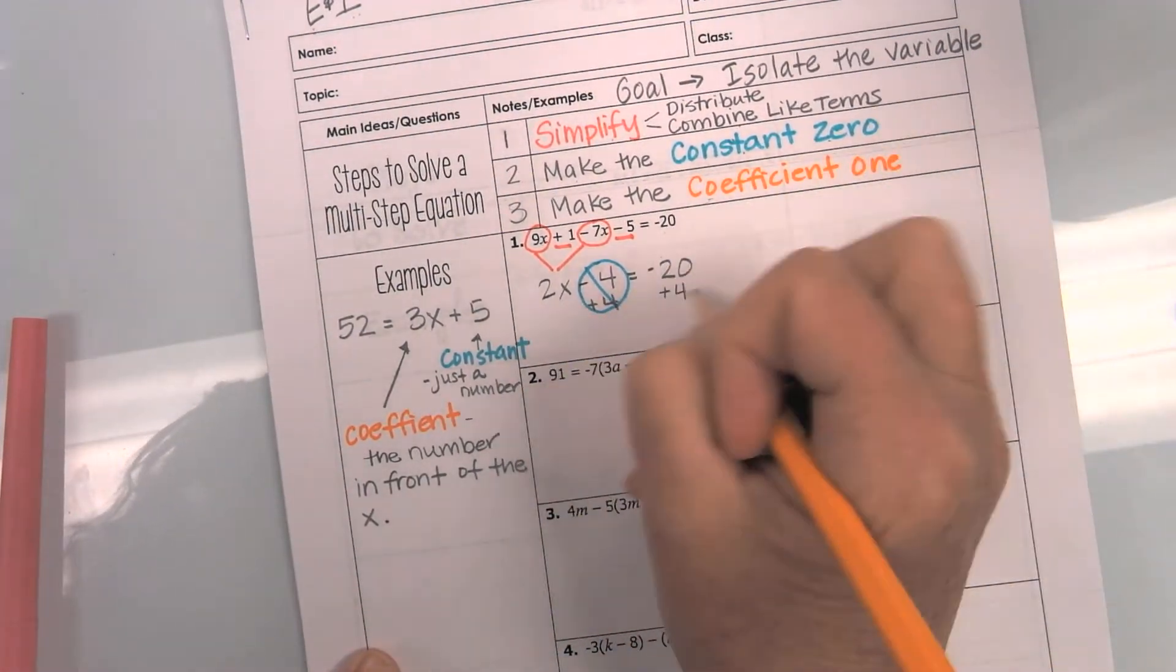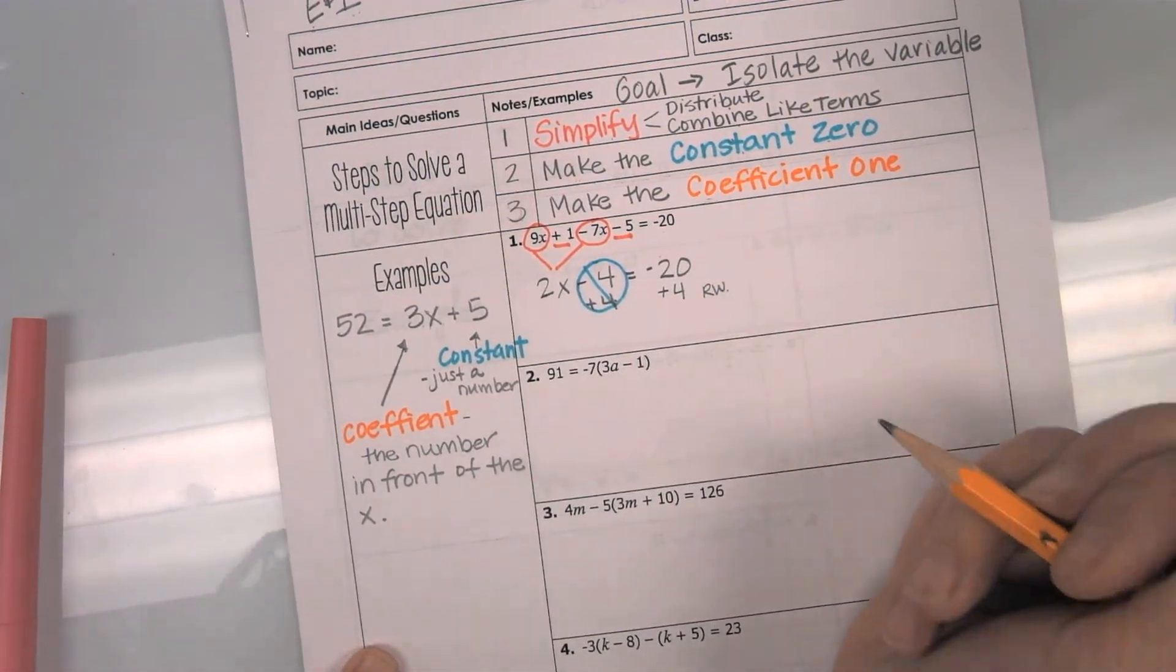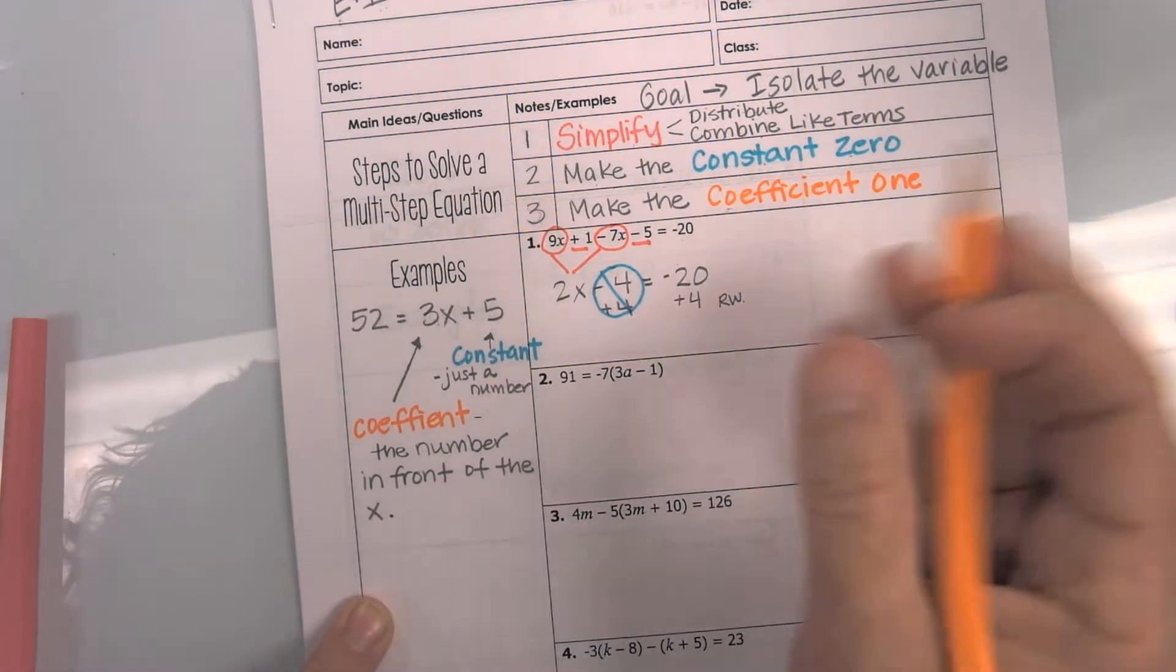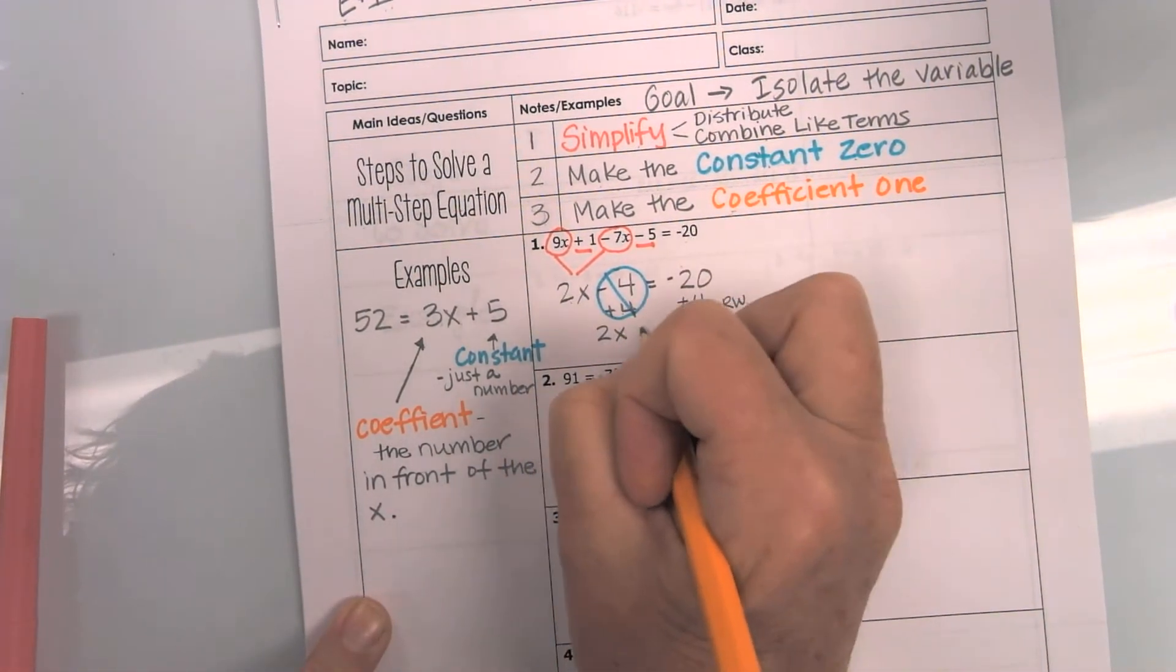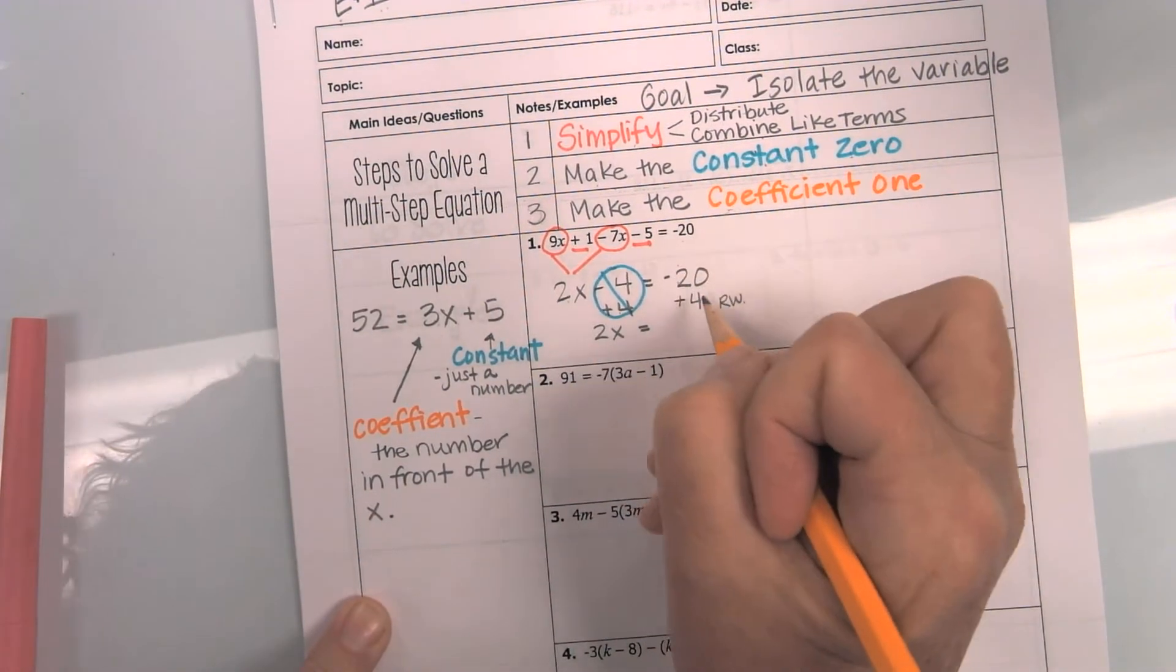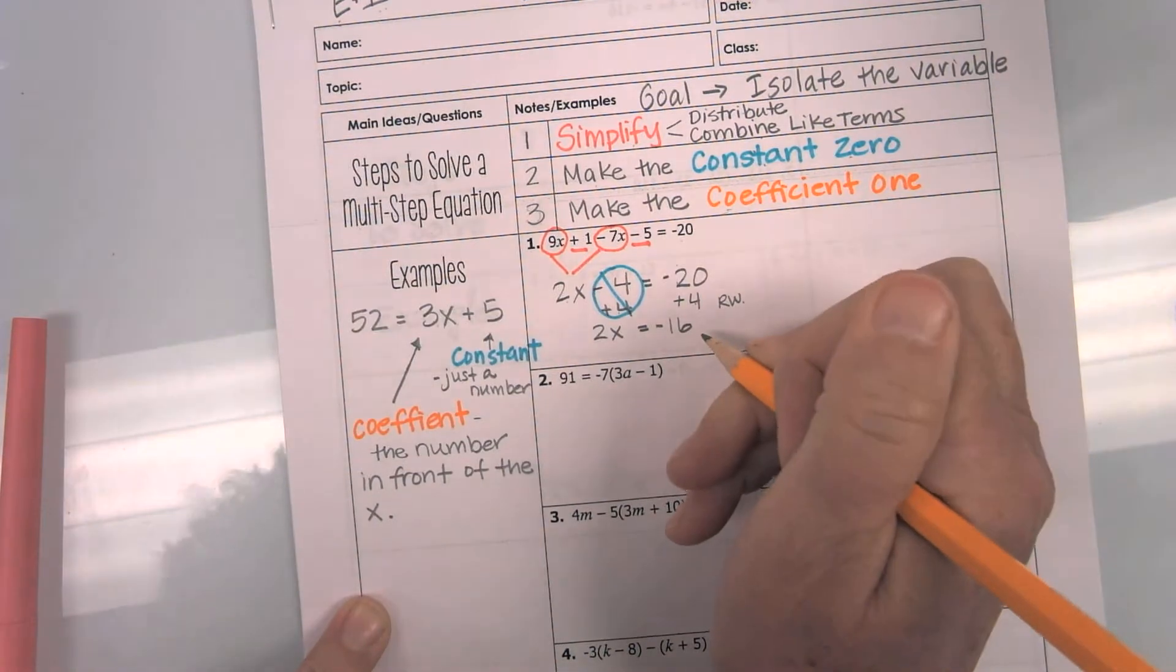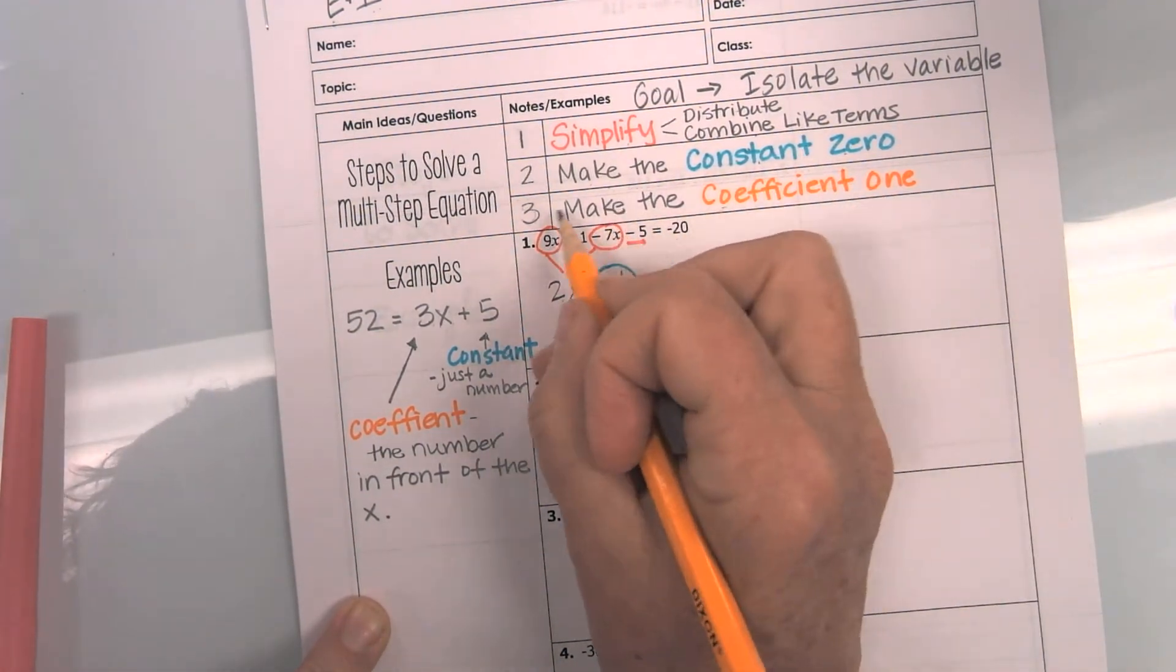Now, at this point, I do rewrite. You'll always see me do this little rw. You do need to rewrite so that it doesn't get messy. Don't get lost in the numbers. So, now I have a 2x equals and a negative 20 and a positive 4 becomes a negative 16. If we need to review integer rules, we can do that. Okay, now my goal, step 3,